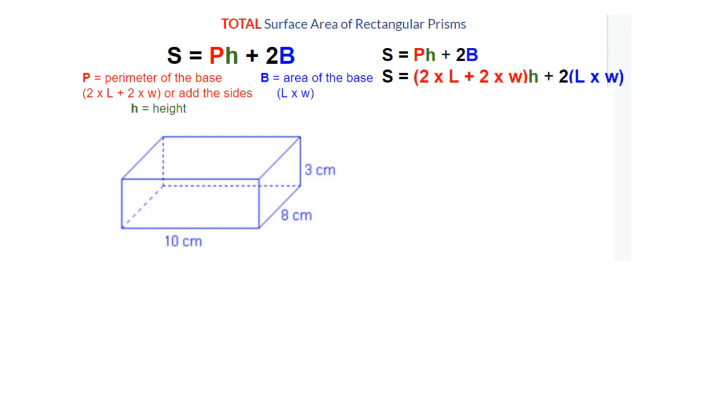In this video, we will talk about how to find the total surface area of rectangular prisms using the formula shown. The formula says S is equal to capital P times H plus 2 times capital B.